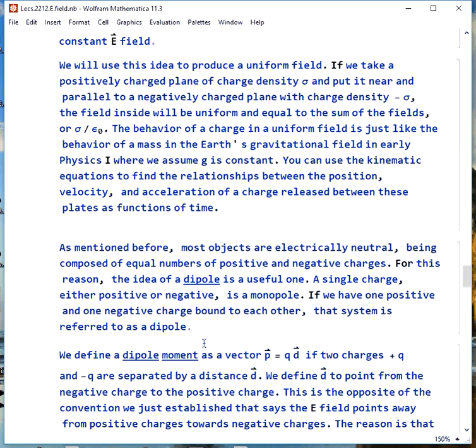Later, we'll use this idea to make a uniform e field. If we take a positively charged plane of charge density sigma and put it near and parallel to a negatively charged plane with charge density negative sigma, the field inside will be uniform and equal to the sum of the fields, or just sigma over epsilon naught. The behavior of a charge in a uniform field is just like the behavior of a mass in Earth's gravitational field in early physics 1, where we said g was constant. You could use the kinematic equations to find the connections between position, velocity, and acceleration of a charge released between these plates as functions of time.